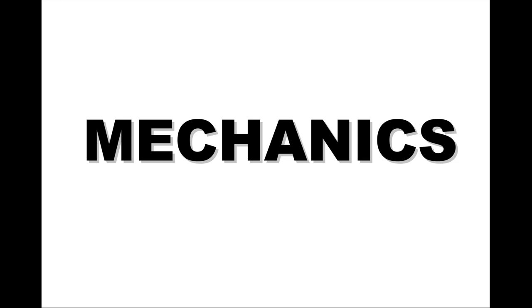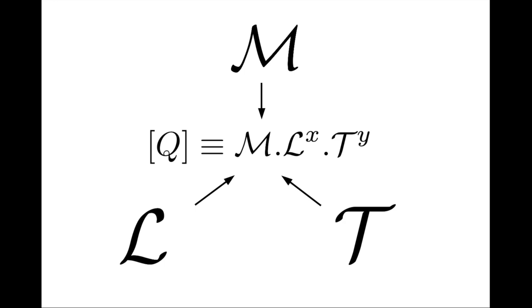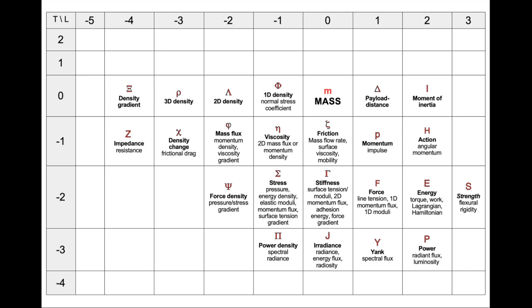It's now the fifth episode in our exploration of the mechanical quantities, which are combinations of space, time, and matter. More specifically, we've been concentrating on mechanical quantities where the exponents x and y are small integers, such that the quantities can be represented in a table — the table of standard mechanical quantities. In the past episodes, we've been learning how to use this tool to better understand space, time, and motion.